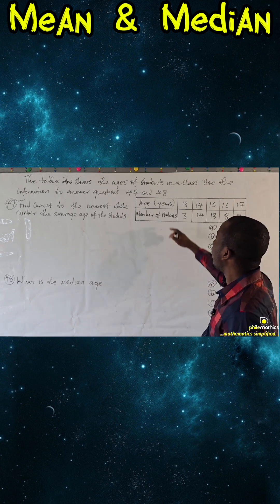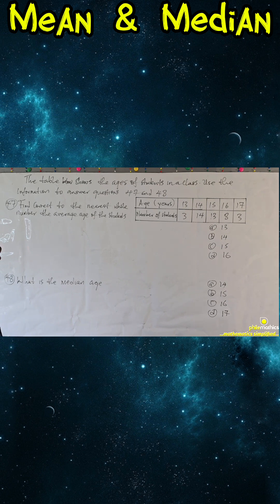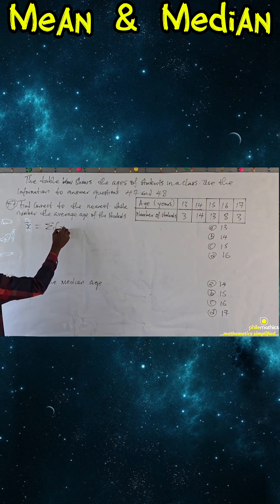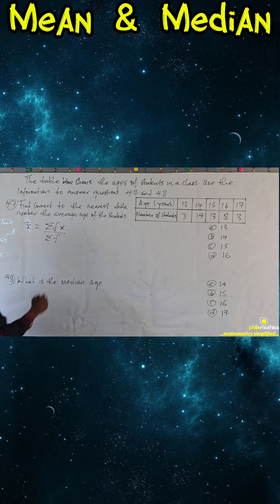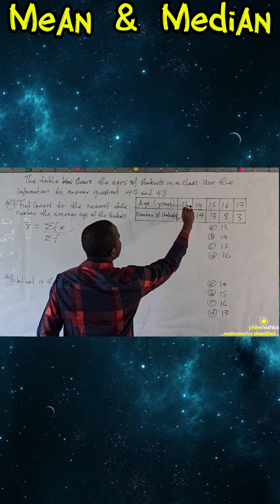This is the frequency table that is given. You remember that to find the average, it is simply summation of fx over summation of the frequency. Summation of fx simply means multiplying this and this and summing it.